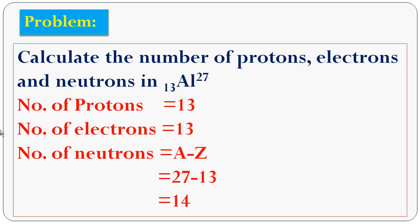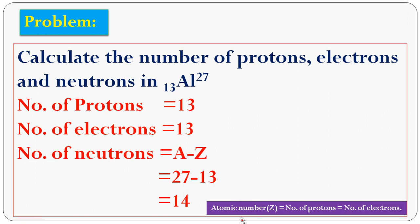Now come to the problem. Calculate the number of protons, electrons and neutrons in aluminium, Al. The symbol is Al, mass number 27, atomic number 13. Atomic number Z equals number of protons equals number of electrons. So atomic number 13 means the number of protons equals 13 and the number of electrons equals 13. Number of neutrons equals A minus Z: 27 minus 13 equals 14.